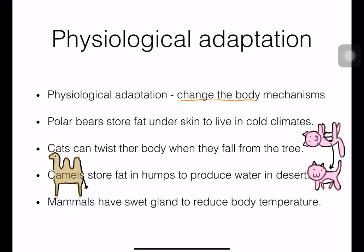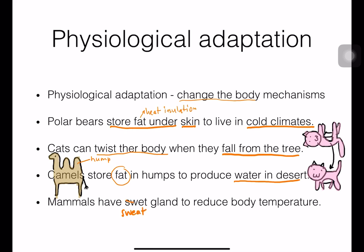Physiological adaptation means how organisms change their body mechanisms to survive. For example, polar bears store fat under their skin for heat insulation in cold climates. Cats twist their bodies when falling from a tree to avoid damage to internal organs. Camels store fat in their humps, and when digested, the fat releases water into the bloodstream so camels can live longer in dry deserts. Mammals also have sweat glands to reduce body temperature.